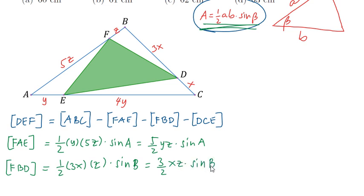The area of DCE is equal to 1 half times x times 4y times sine of angle C, or 2XY sine C.